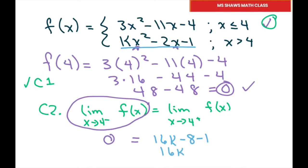So we get 16k minus 9 equals 0. Therefore, 9 equals 16k, so k equals 9 divided by 16.